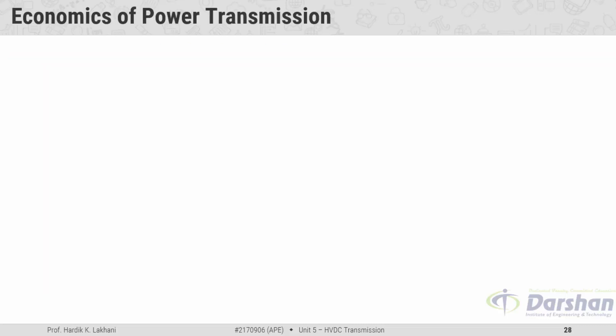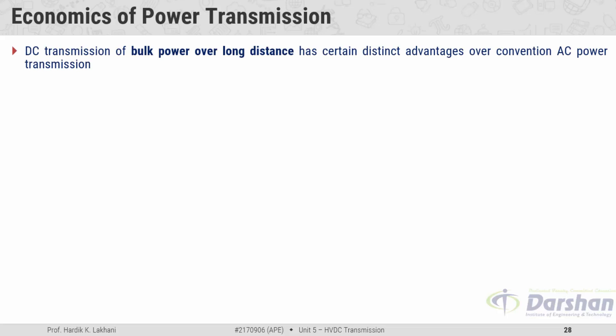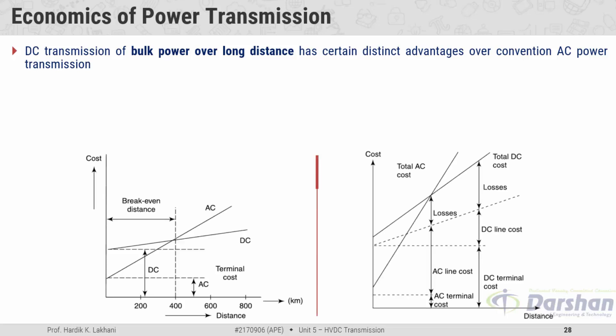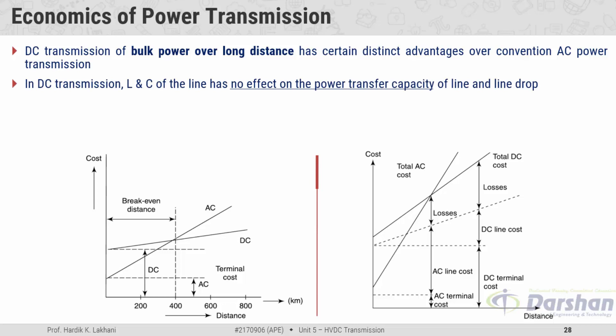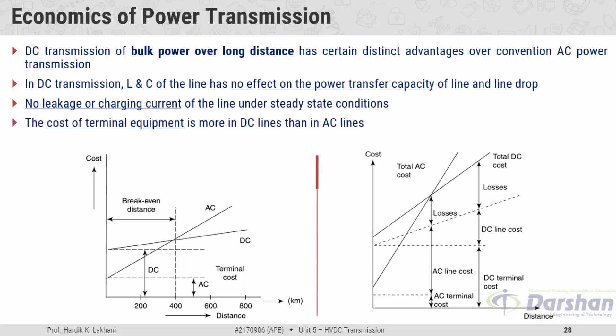The first factor is economics of power transmission. The DC transmission of bulk power over long distances has certain advantages over conventional AC power transmission. In DC transmission, the inductor and capacitor of the line has no effect on power transfer capacity and line drop. There is no leakage or charging current of the line under steady state conditions. The cost of terminal equipment is more in DC lines than in AC lines, so a cost comparison between AC and DC transmission systems is made using graphs.